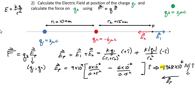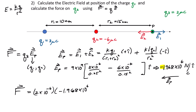Now to get the force, we use F = QE. We place Q3 at point P and multiply: 2×10⁻⁶ coulombs times −1.968×10⁶ newtons per coulomb, giving a total force of −3.936 newtons — exactly the same value found using Coulomb's law. The net force acts in the negative x direction.